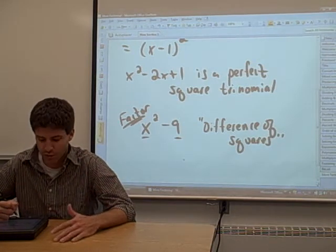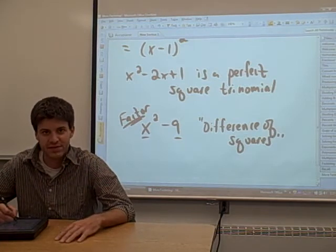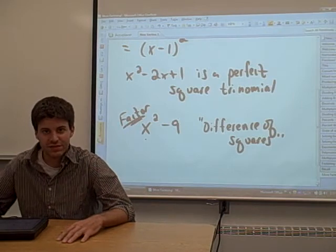It's called that because there's a minus sign that gives us a difference of two terms. And both of those two terms are perfect squares. x squared is the square of x. And nine is the square of three. Whenever you have a case like this, it's a difference of squares.